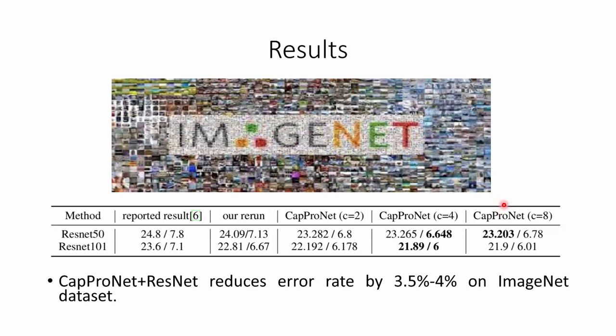To test the scalability of CapProNet, we also evaluated on the ImageNet dataset using two ResNet backbone variants with different subspace capsule dimensionalities, achieving an average 3.5% to 4.5% improvement over the baseline.